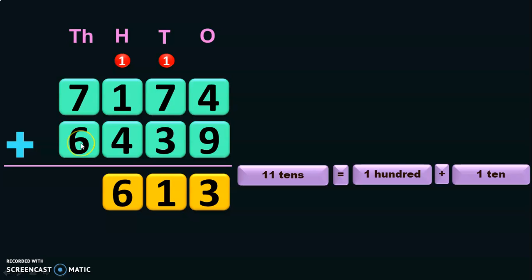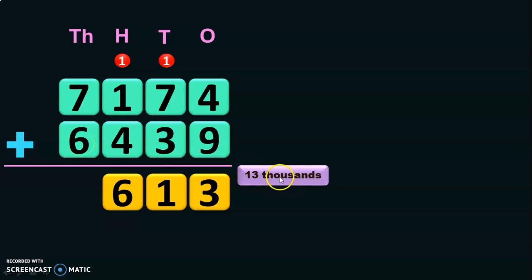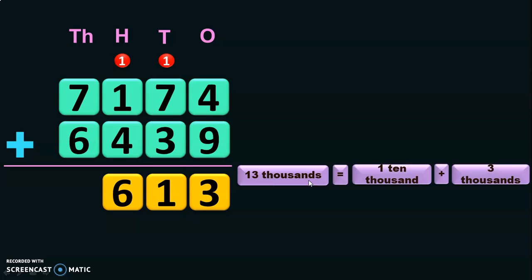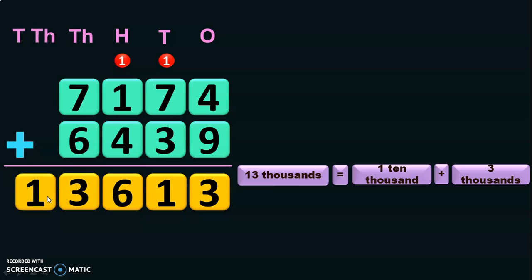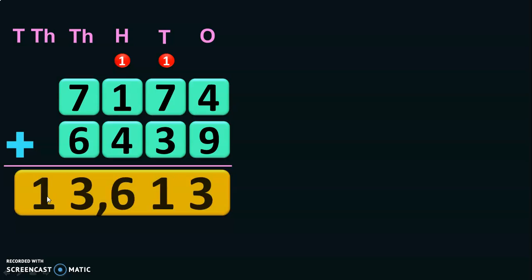7 plus 6 will give you 13 thousands. So now you're going to regroup the digits in the thousands place. 13 thousands is nothing but 1 ten-thousand plus 3 thousands, so you will retain the 3 thousands in the thousands place and take the 1 ten-thousand as a carry-over to the fifth place value, which is the ten-thousands place. The sum of the two four-digit numbers in this case is giving you a five-digit number: 13,613.